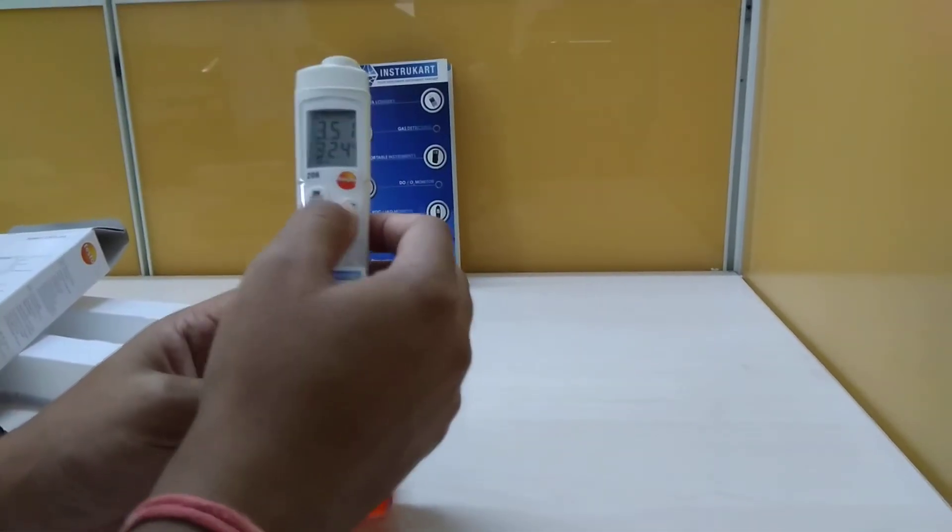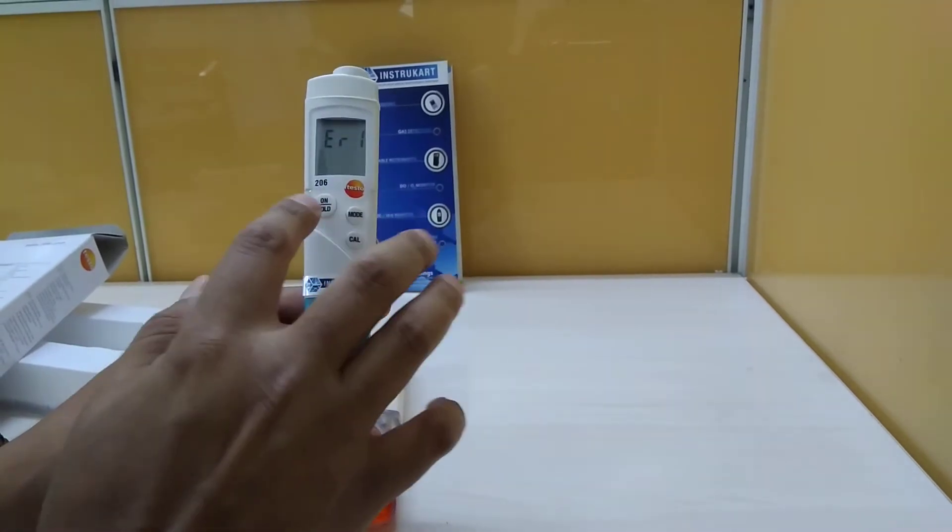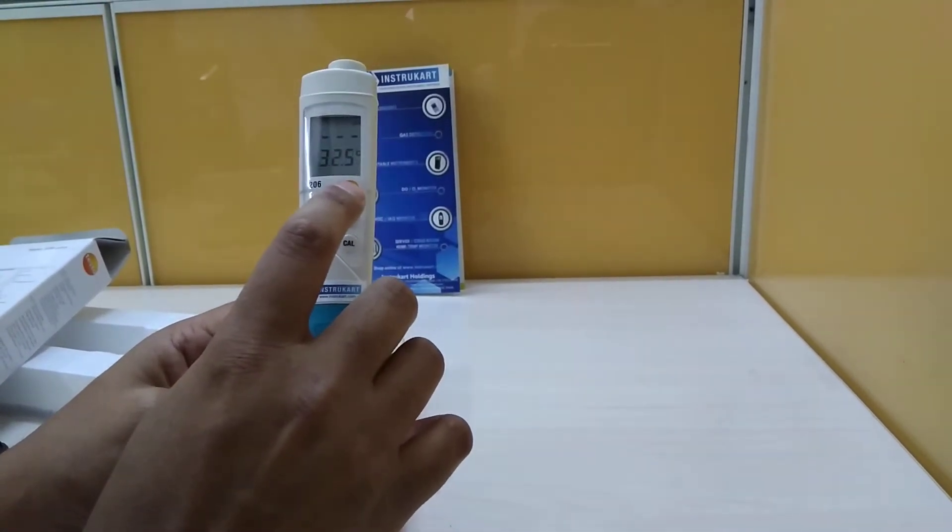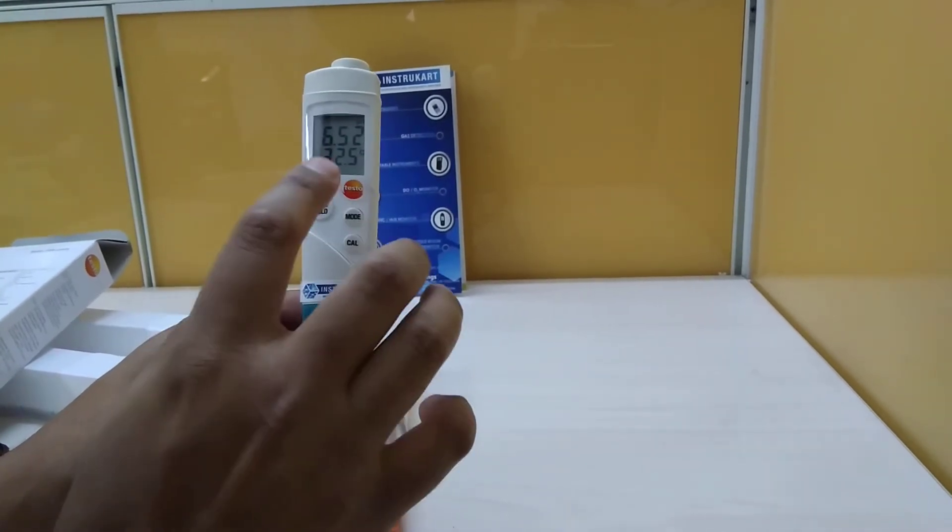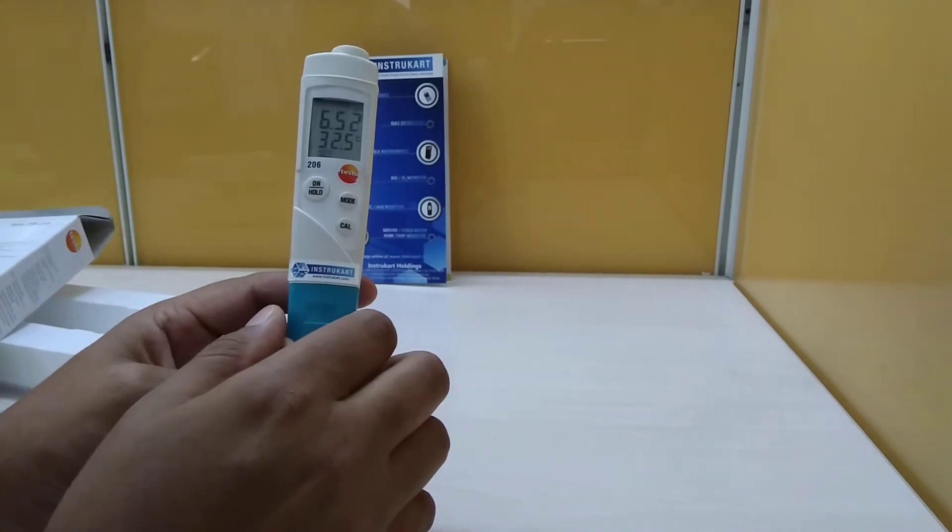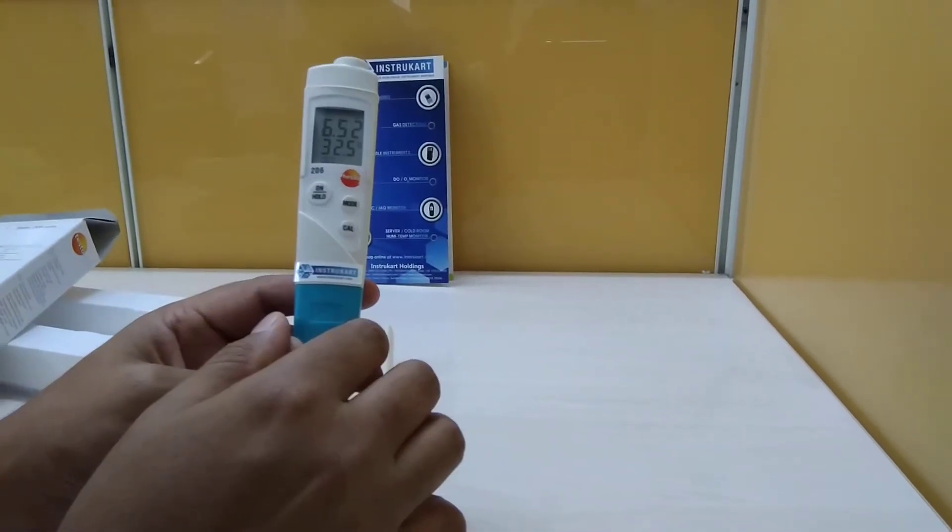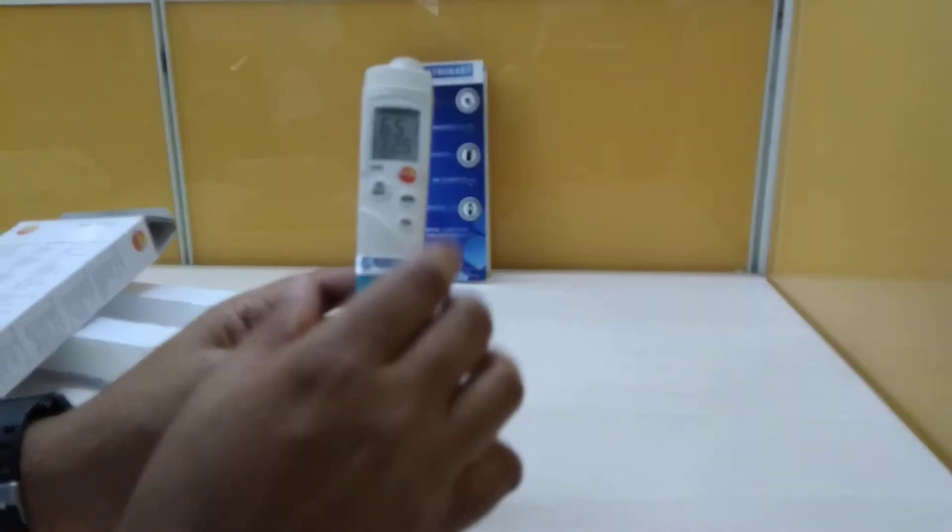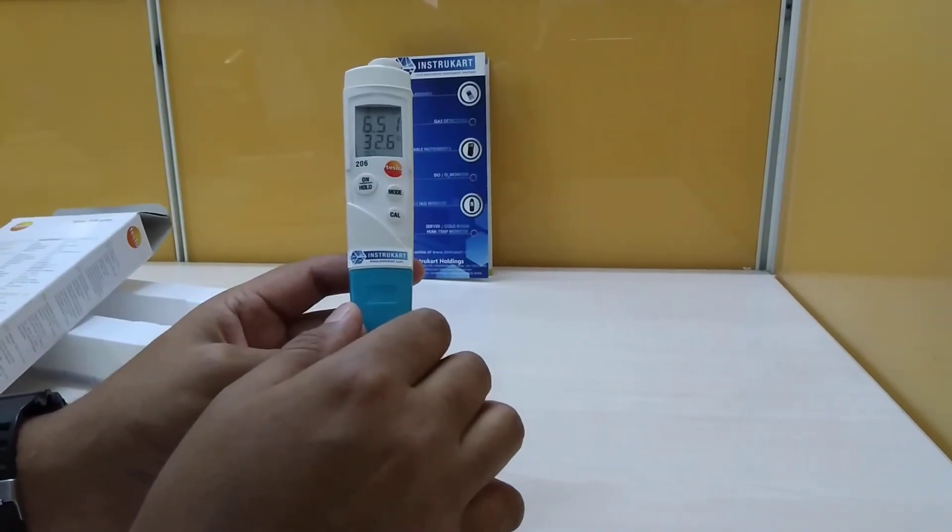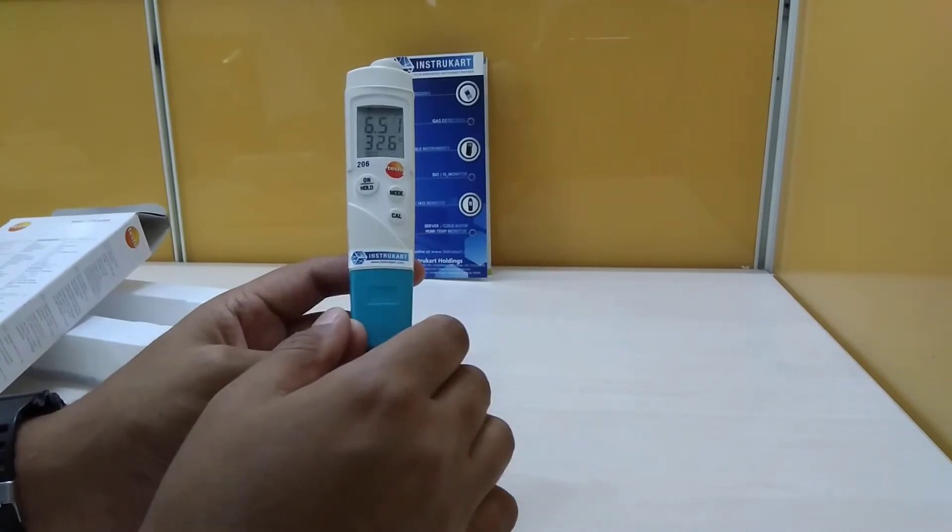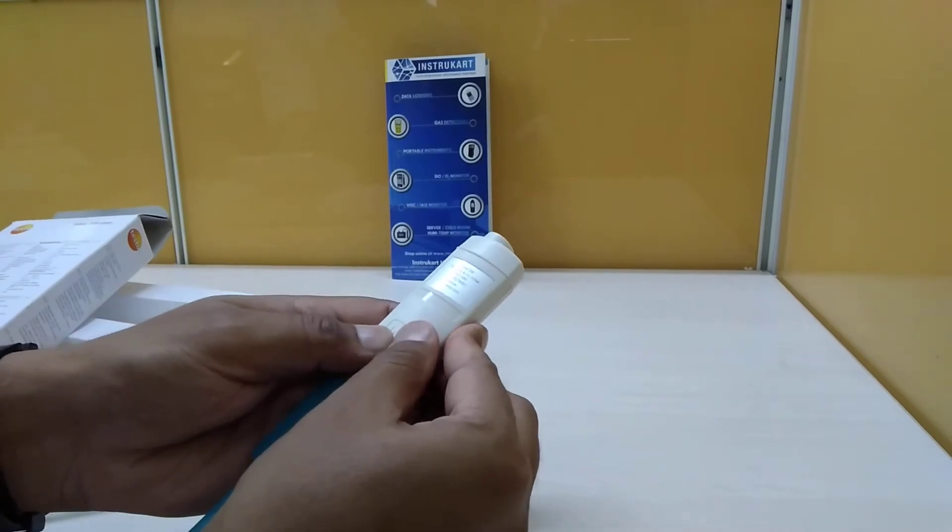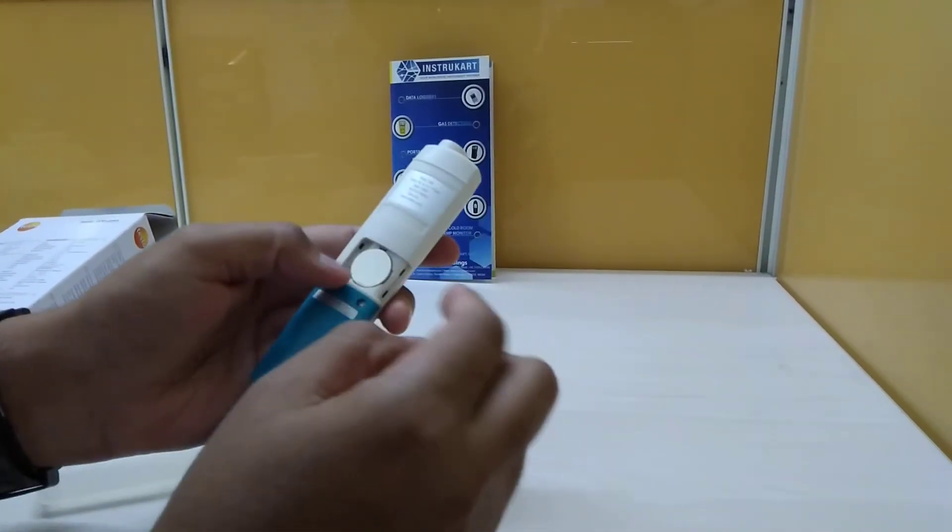We have three buttons on the top which give you the current pH and current temperature. It takes a measurement in two seconds. The application temperature for this is 0 to 60 degrees Celsius, and storage is minus 22 to plus 70 degrees. It has one battery, which you can see here, the CR2032 battery.